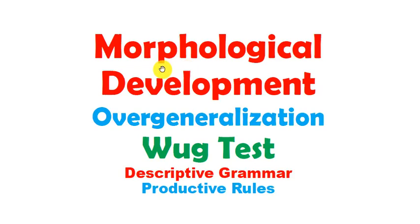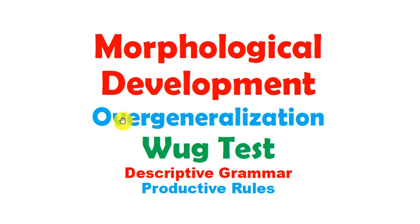Hello friends, most welcome to the crash course of psycholinguistics. In this video we will discuss morphological development, or in other words the acquisition of native language morphology. We will also discuss overgeneralization made by children in the acquisition of their native language, the Wug test by Jean Berko, prescriptive grammar, descriptive grammar, and productive rules by children.